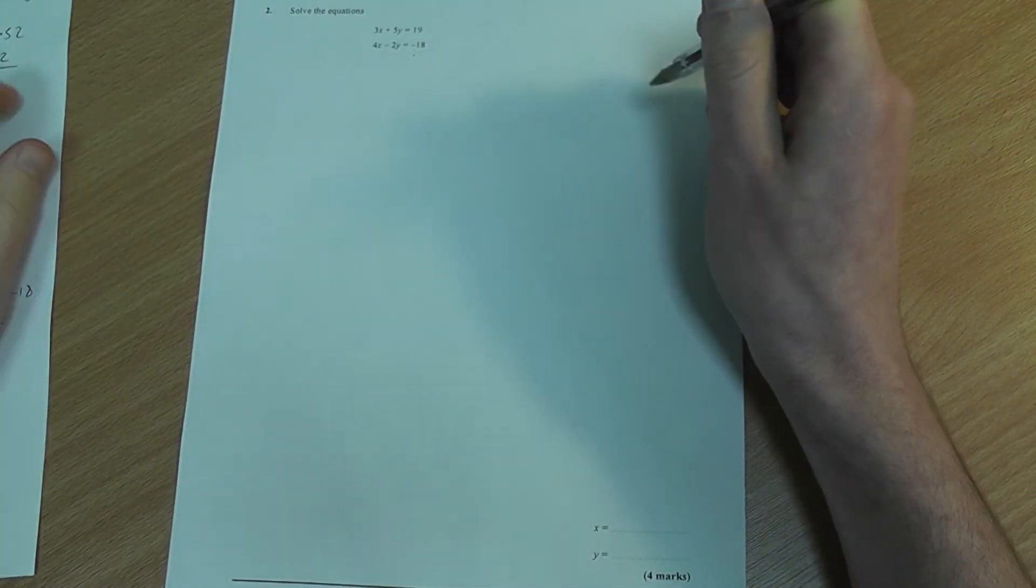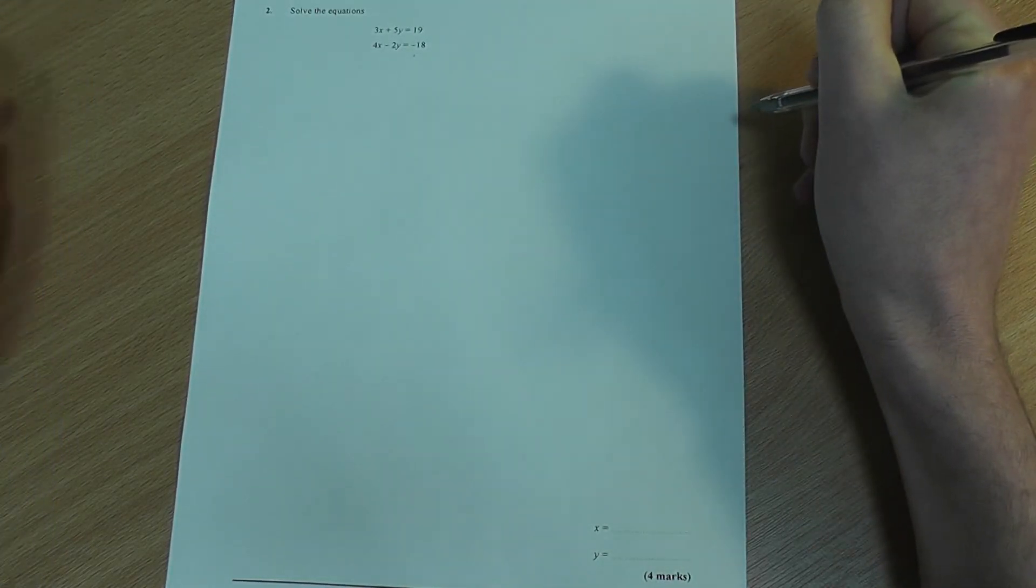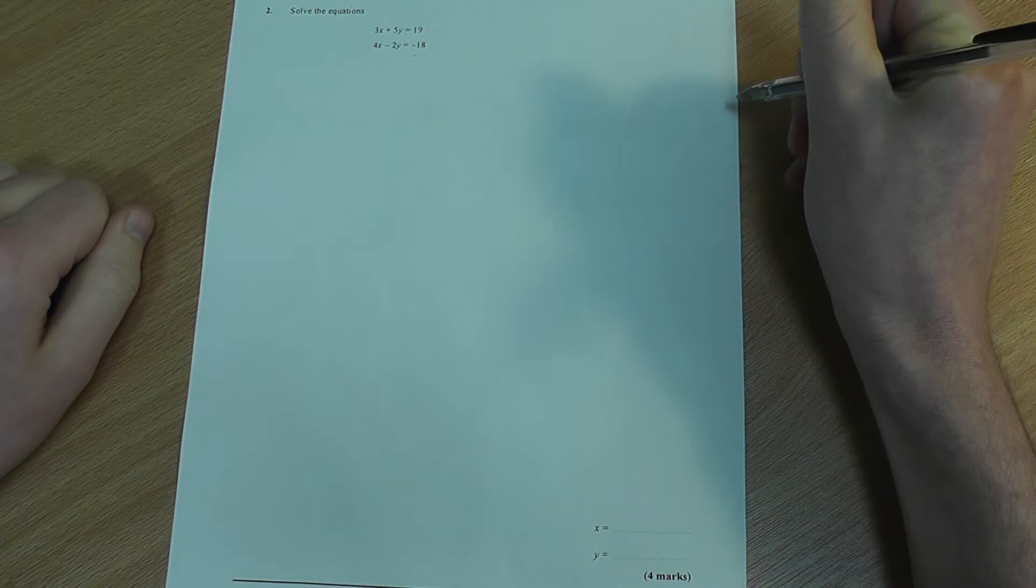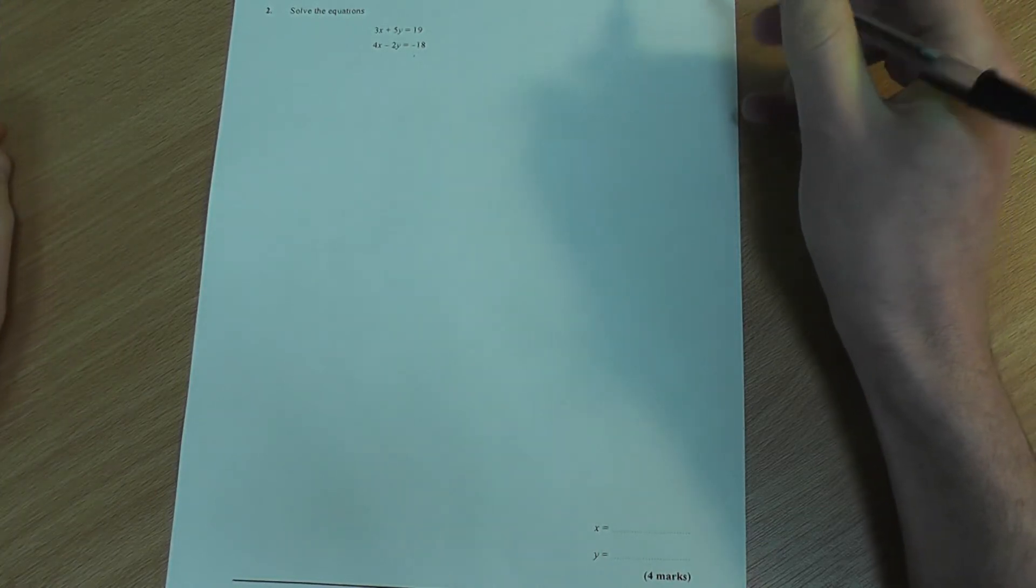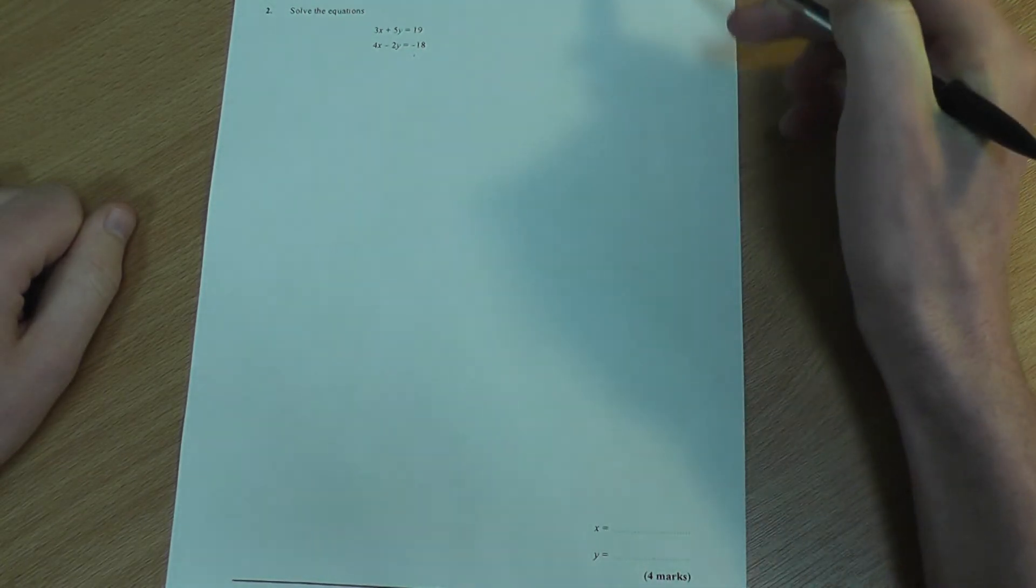Right then, so we're going to solve these equations: 3x plus 5y equals 19 and 4x minus 2y equals minus 18. So, with simultaneous equations, the key is to make the coefficients of either the x or the y the same.